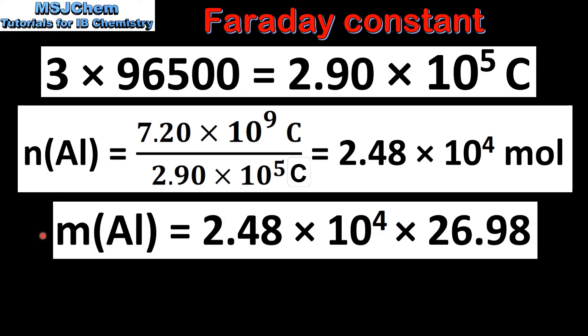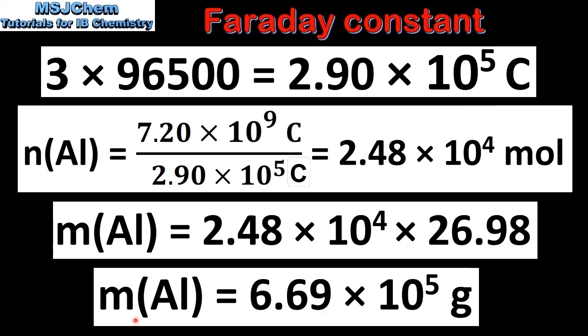The final step is to convert from moles of aluminium to mass of aluminium. We use the equation mass equals amount in moles multiplied by the molar mass. That's 2.48 times 10 to the 4 multiplied by the molar mass of aluminium which is 26.98 grams per mole, and this gives us a mass of aluminium produced at the cathode of 6.69 times 10 to the 5 grams.